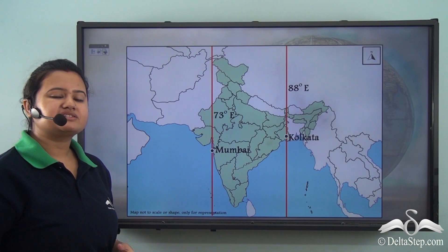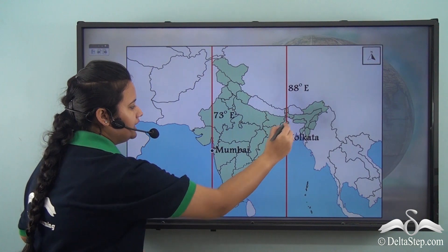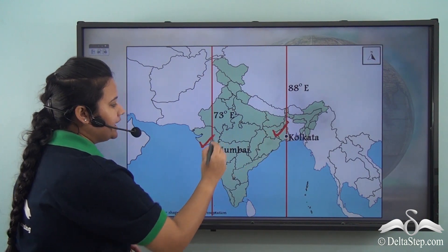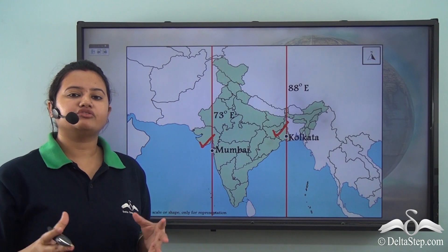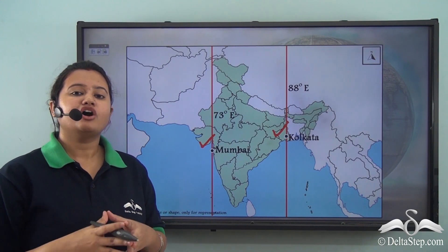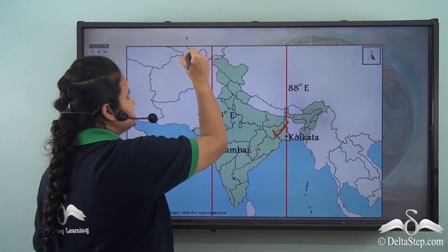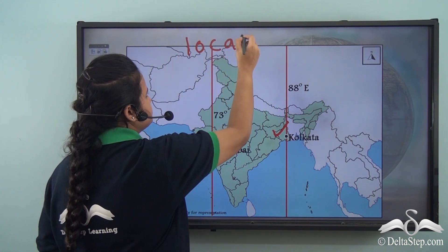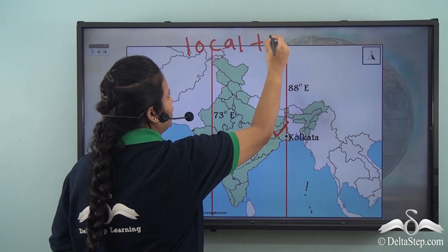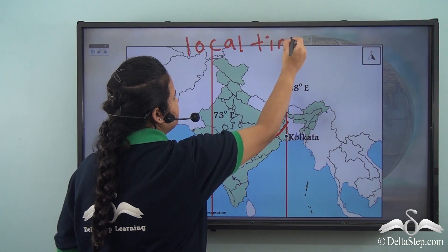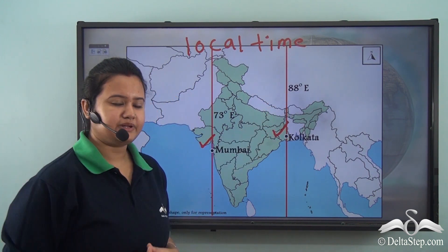The timings of these two places, that is Kolkata and Mumbai, differed because each of these places followed their own local time — that is the time according to the longitudes that pass through each of these places.